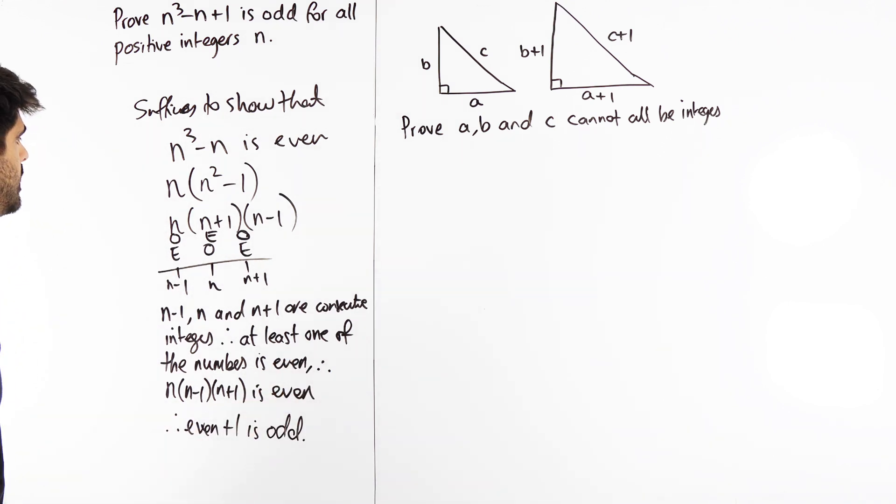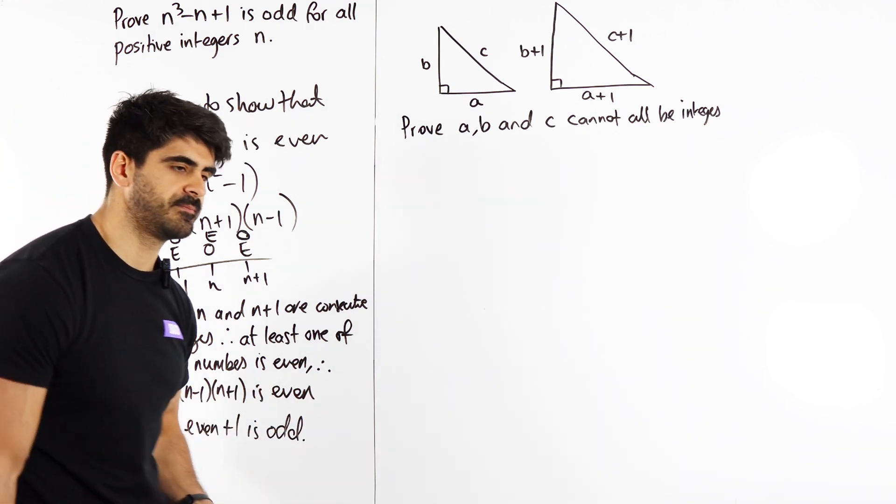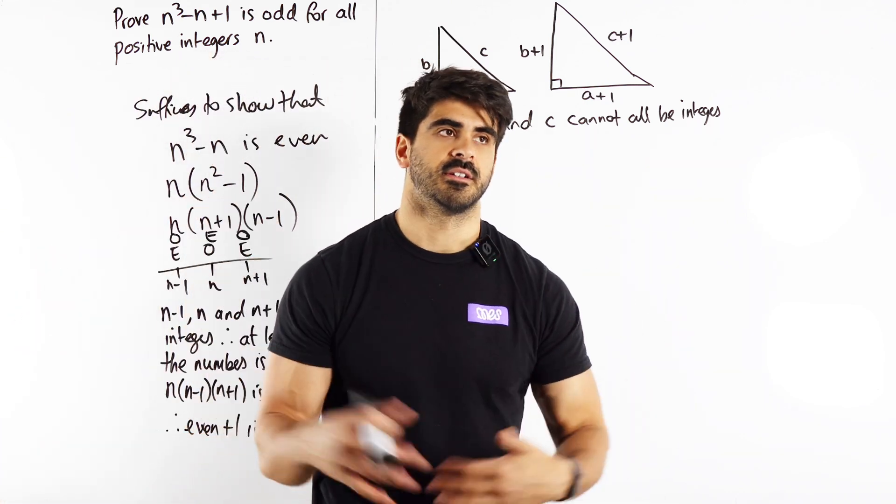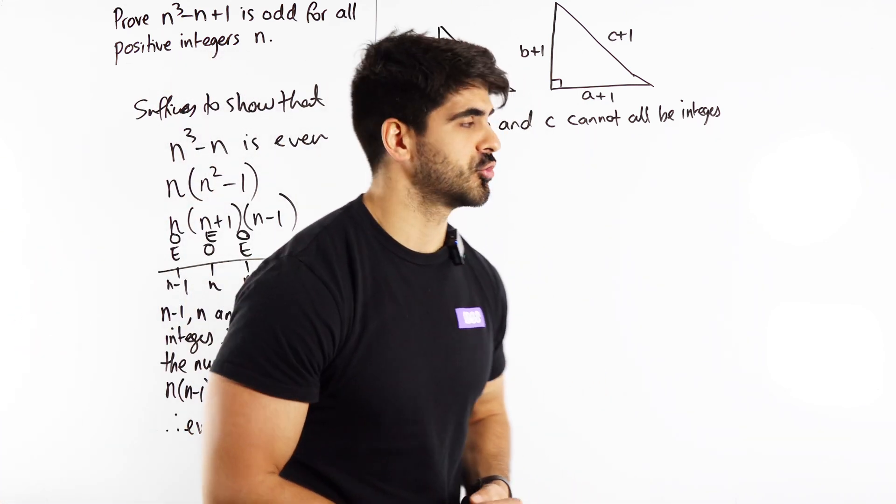And that's proved. Use a bit of theory there to help you guys out. So this is a proof by deduction. In fact, all the proofs are actually deduction, but at A level we do a different one. We do contradiction as well.